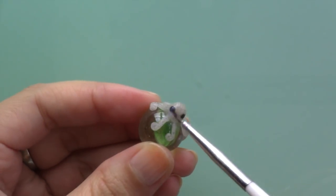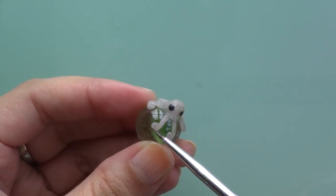Once baked and cool, I glazed him with gloss varnish for a straight out of the ocean look.